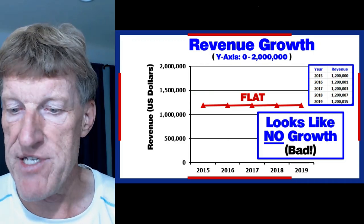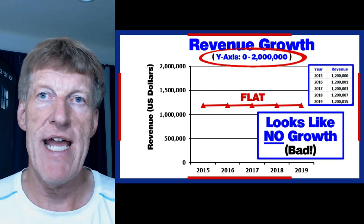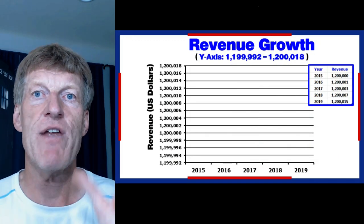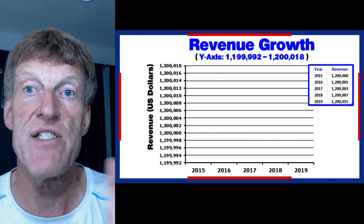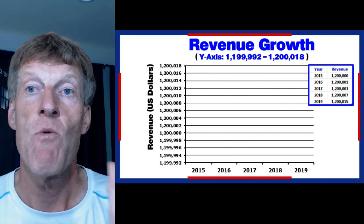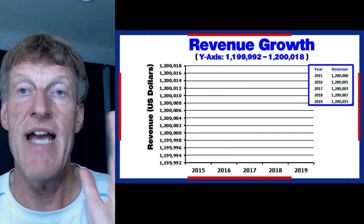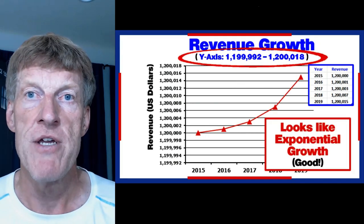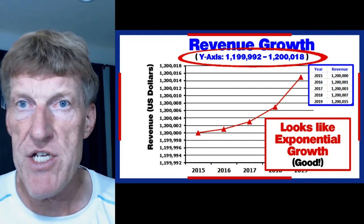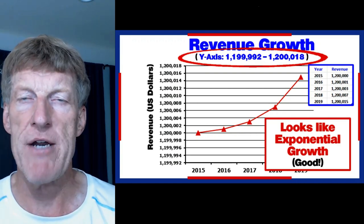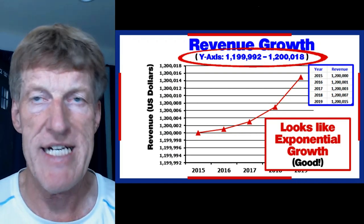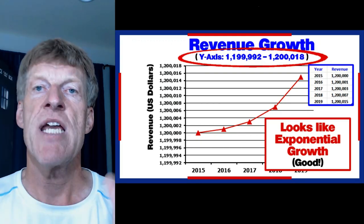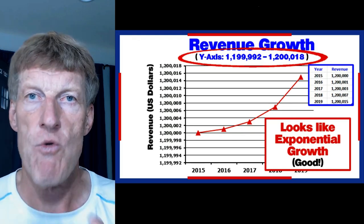This is where the Y-axis is your friend. See right there? The Y-axis goes from zero to 2 million — forget that. Change the Y-axis: we go from 1,199,992 to 1,200,019. Look what happens — all of a sudden, we have exponential growth. Same values, same values of growth, but that looks so much better. You're going to inspire your sales and marketing and engineering and all those people because look — we're growing exponentially. It's all about how you choose your Y-axis.